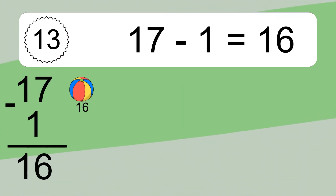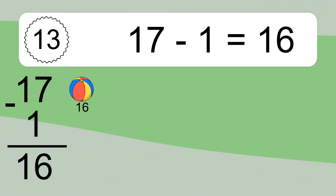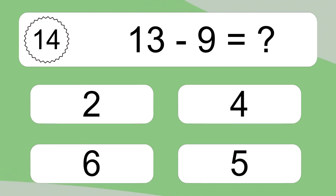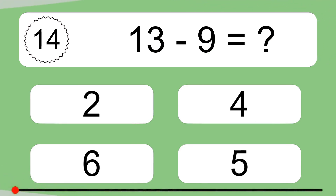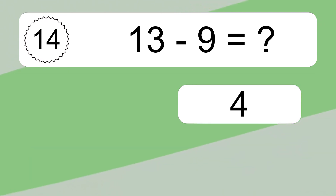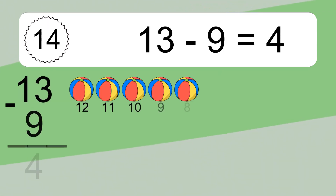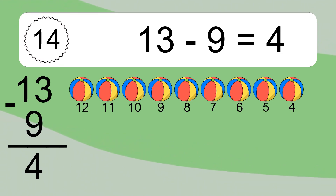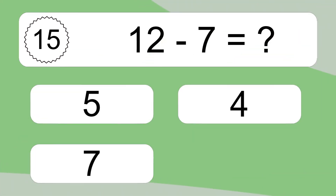17 minus 1 equals 16. Let's count it. 16. 13 minus 9 equals what? Let's count it. 12, 11, 10, 9, 8, 7, 6, 5, 4.